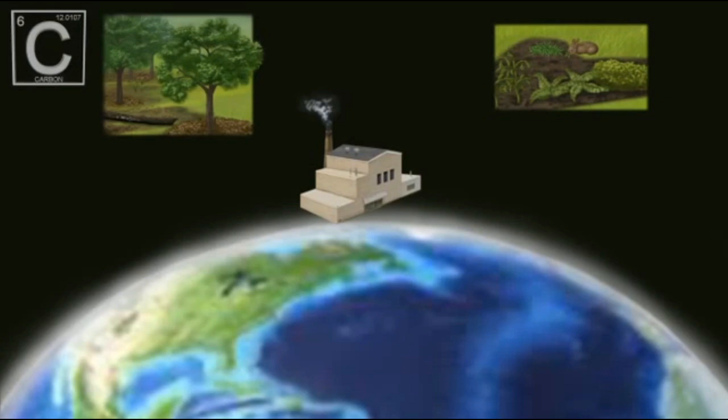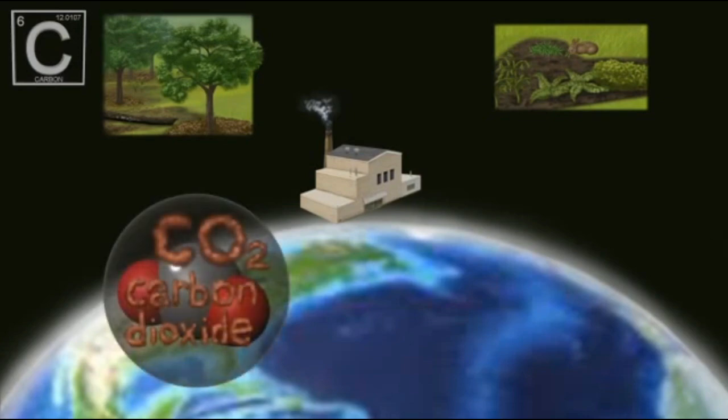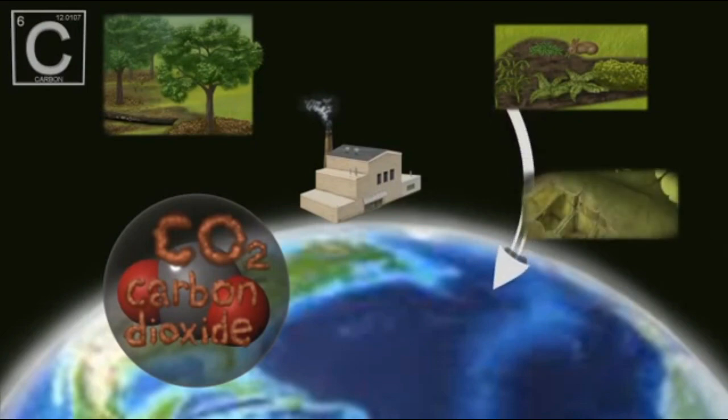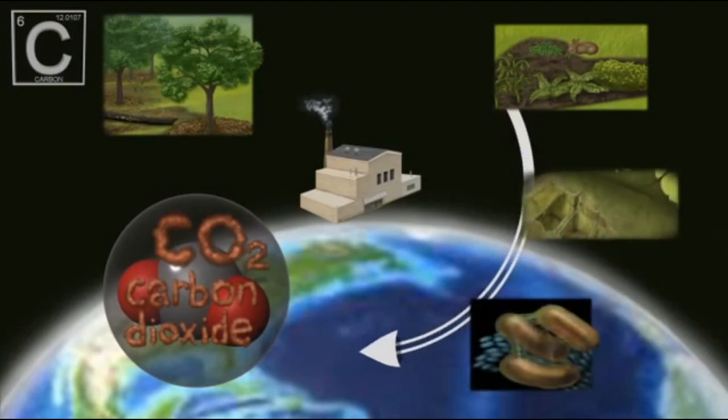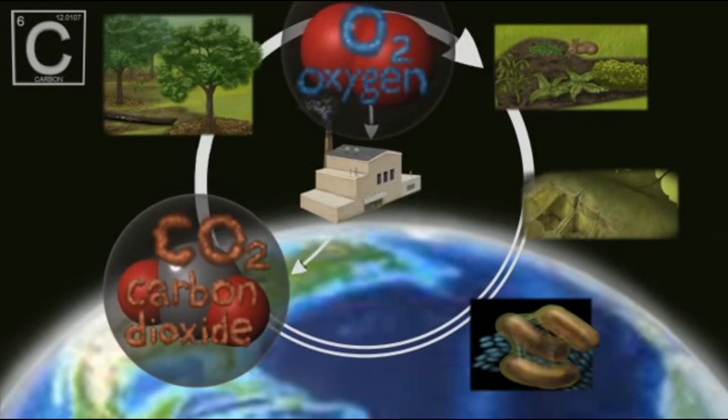Gases made from carbon, such as carbon dioxide, play an important role in regulating climate. Biological activity causes carbon to be constantly converted among different forms and locations. These movements of carbon are referred to as the carbon cycle.